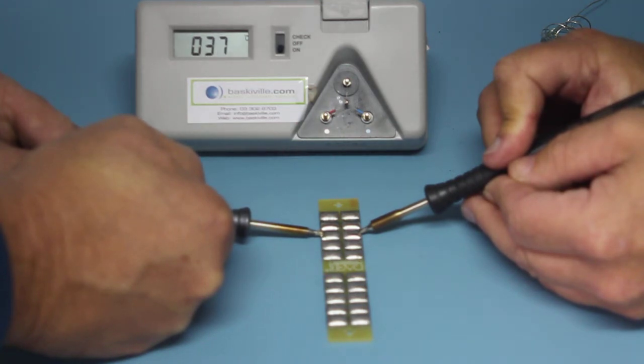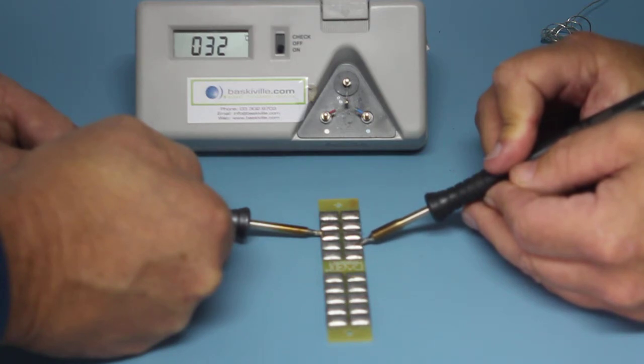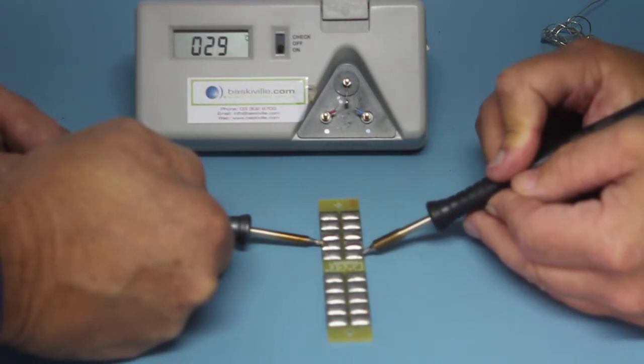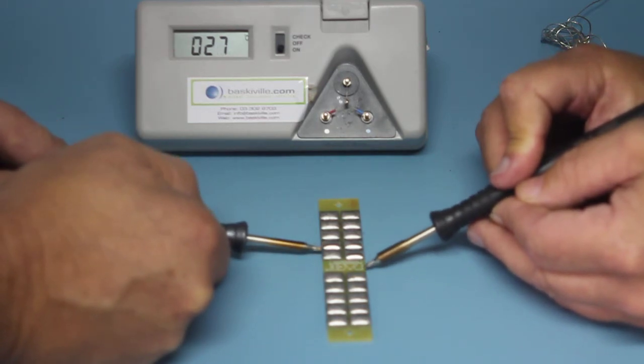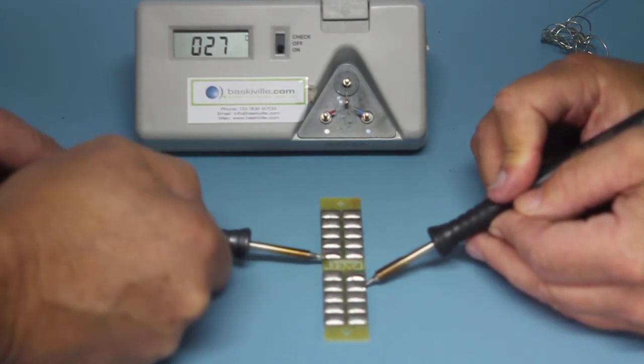This shows the thermal performance not just of the tip but also of the soldering station. We're doing 10 solder joints in succession. Some units may perform by running very hot and using the mass of the tip to generate heat, but after 10 solder joints the performance will go down if the unit doesn't have the required wattage or performance.